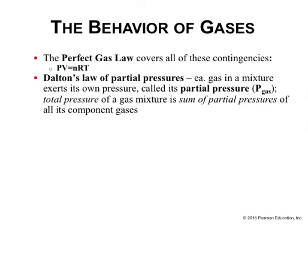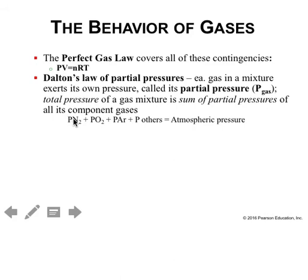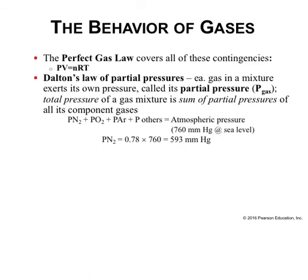Dalton's Law of partial pressure states that each gas in a mixture exerts its own pressure, known as the partial pressure of the gas. The total pressure of a gas mix is the sum of the partial pressures of its components. Looking at the composition of air—approximately 20% oxygen, about 78% nitrogen, and a vanishingly small amount of carbon dioxide and other trace gases—you add up the pressures from each of those individual gases to get the total atmospheric pressure: 760 millimeters of mercury at sea level. The higher you go up in the mountains, the lower the atmospheric pressure becomes; the further you get below sea level, the higher it becomes.